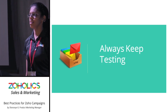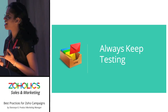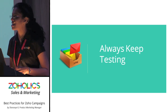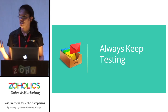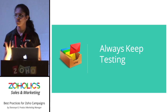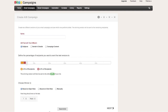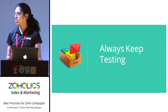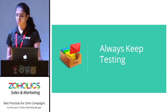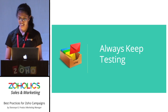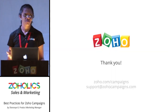The final takeaway is to always keep testing, because you will not understand your audience unless you do this. If you're just getting started with email marketing, you're not going to know the right time, what kind of content, or the type of subscribers that work best. Keep testing subject lines, sender's details, and content — the most common types of testing. Time is also very important; it depends on your subscribers and what kind of campaigns engage them the most. These are the best practices I had to share.